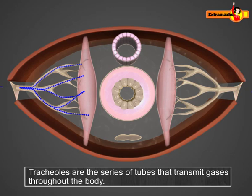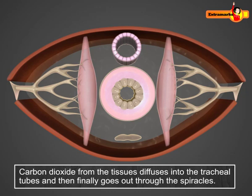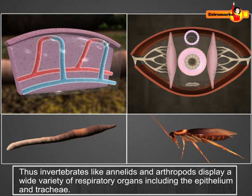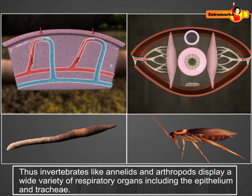In return, carbon dioxide produced as a by-product from the cells is released by the body cells. The carbon dioxide from the tissues diffuses into the tracheal tubes and finally goes out through the spiracles. Thus, invertebrates like annelids and arthropods display a wide variety of respiratory organs including the epithelium and trachea. These adaptations bring the external environment close to the internal fluid which circulates throughout the body.